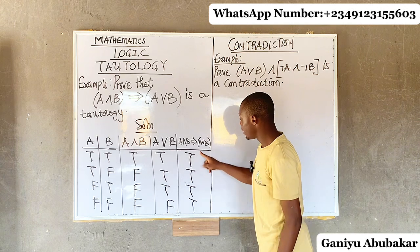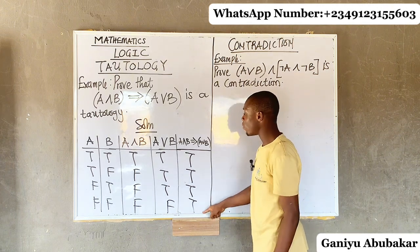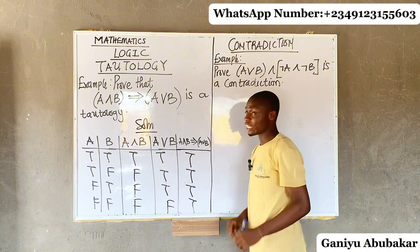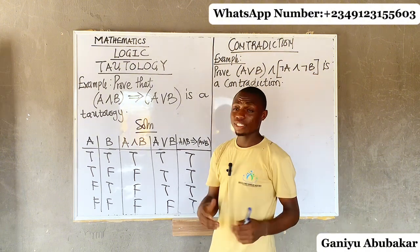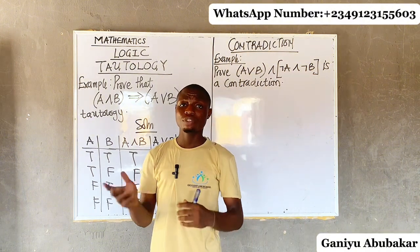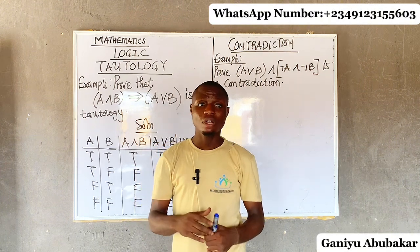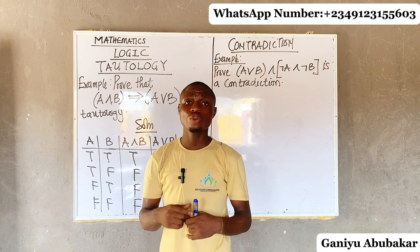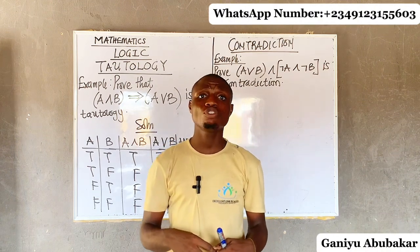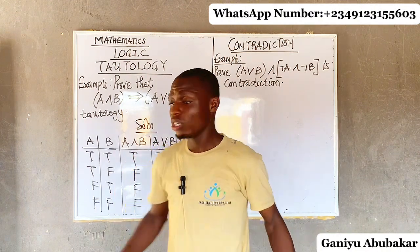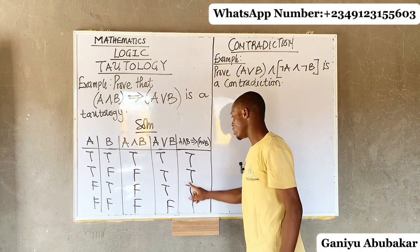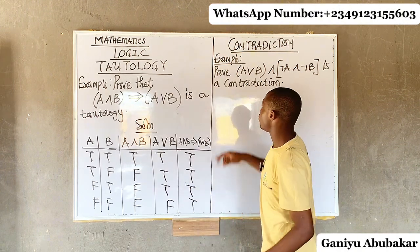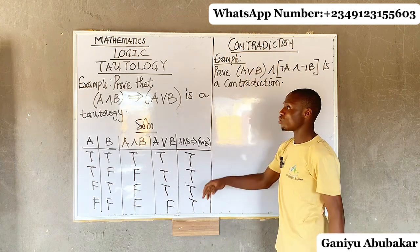This is called tautology because my end product — my final answers — are all true. A tautology is a process of evaluating either a two-variable or three-variable compound proposition with connectives such that all end products are true. If the end products are all true, it is said to be a tautology.